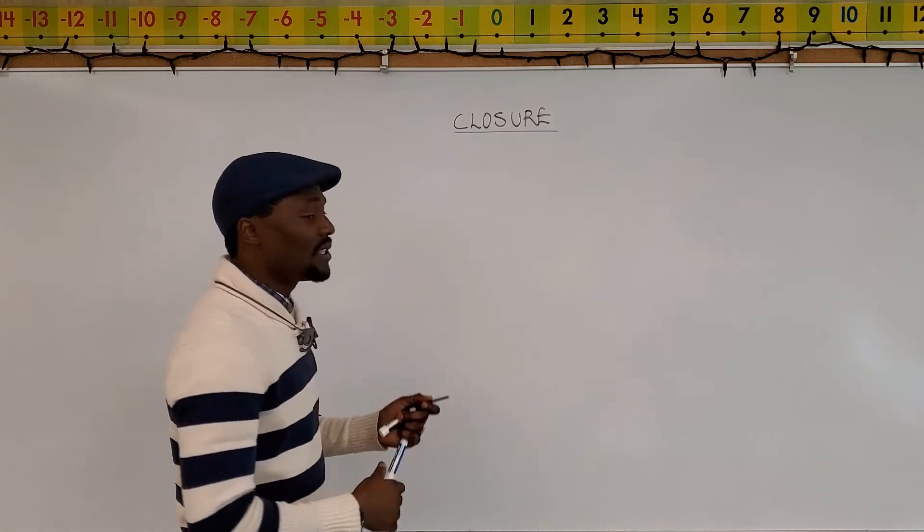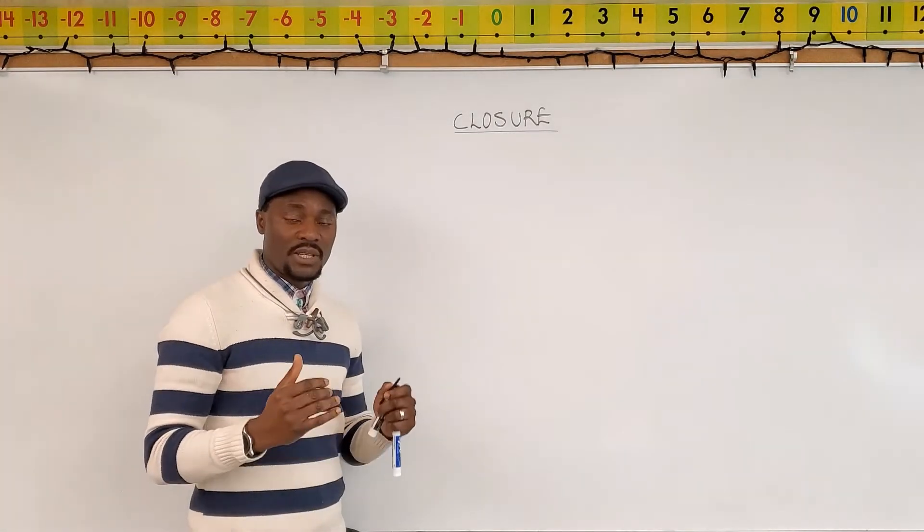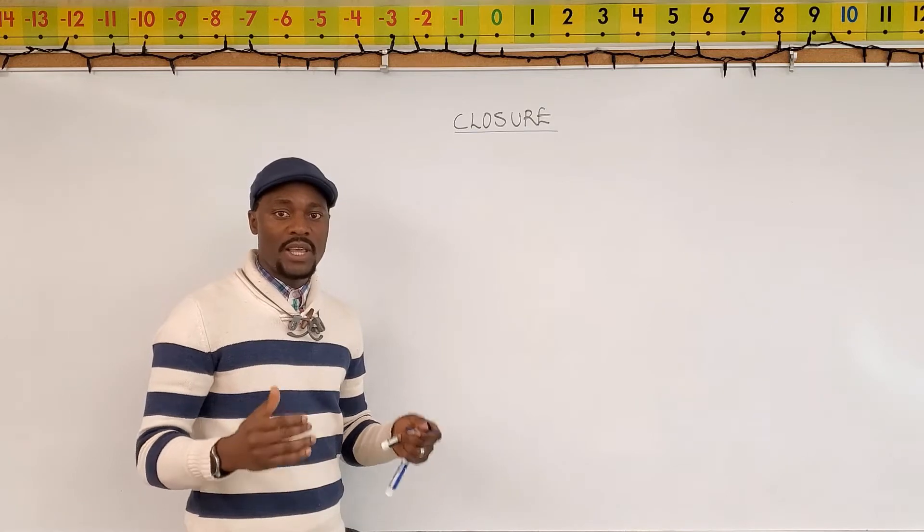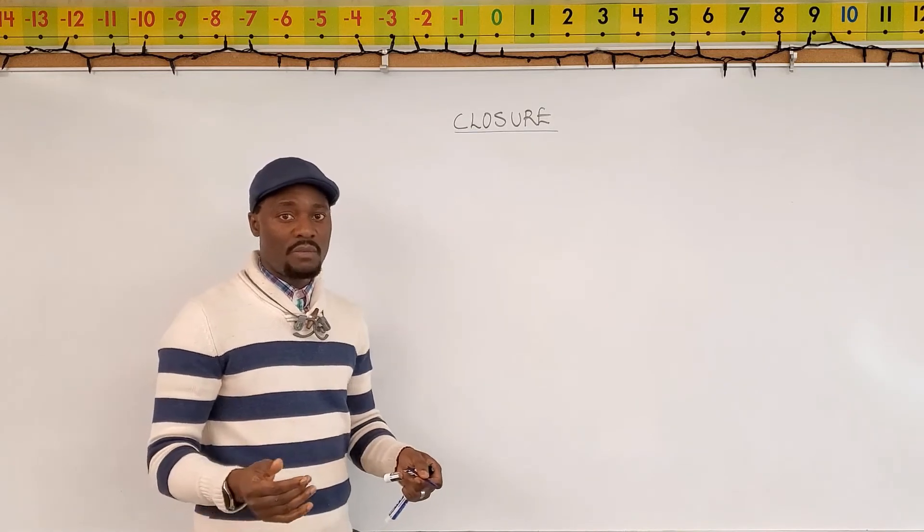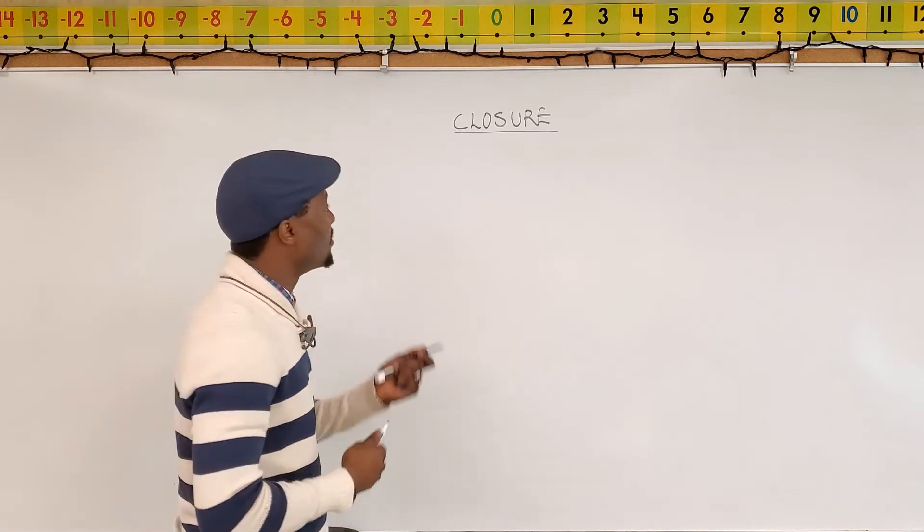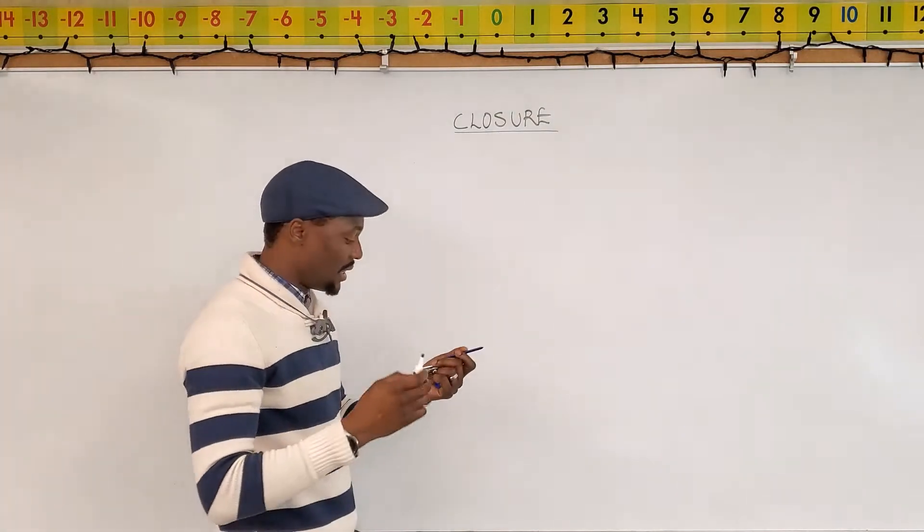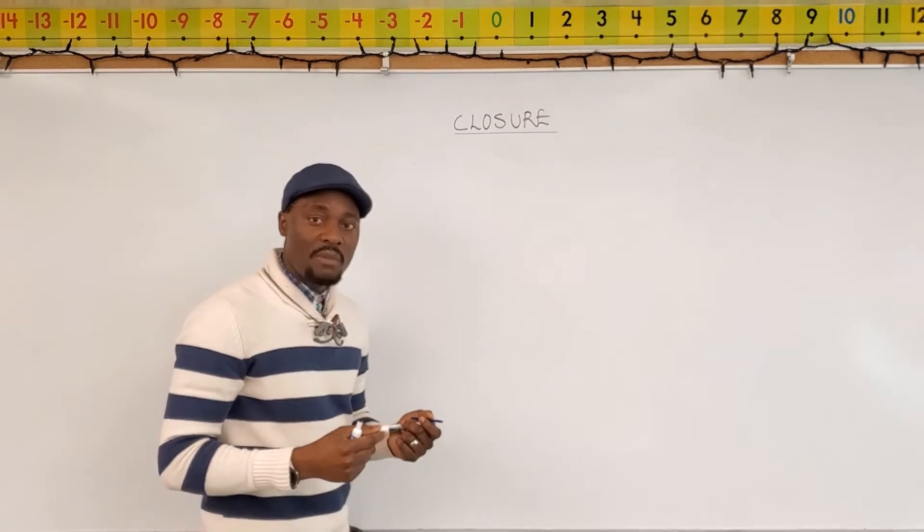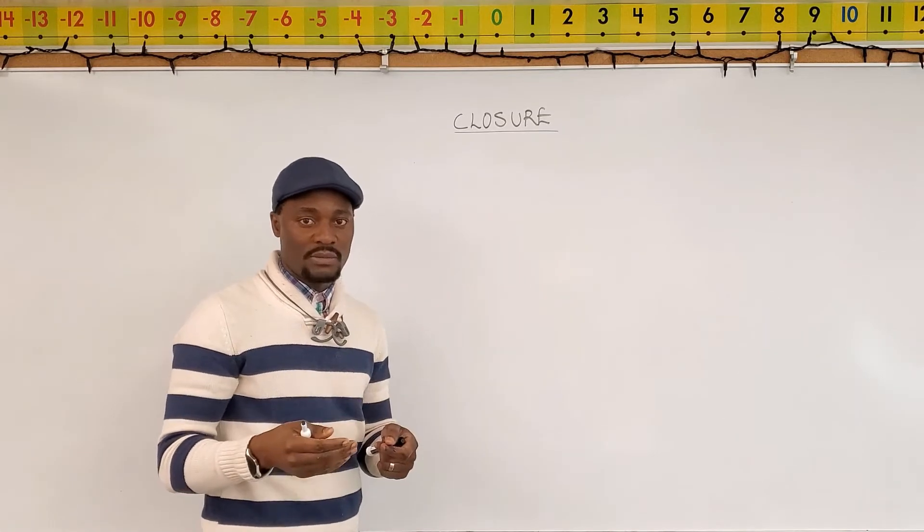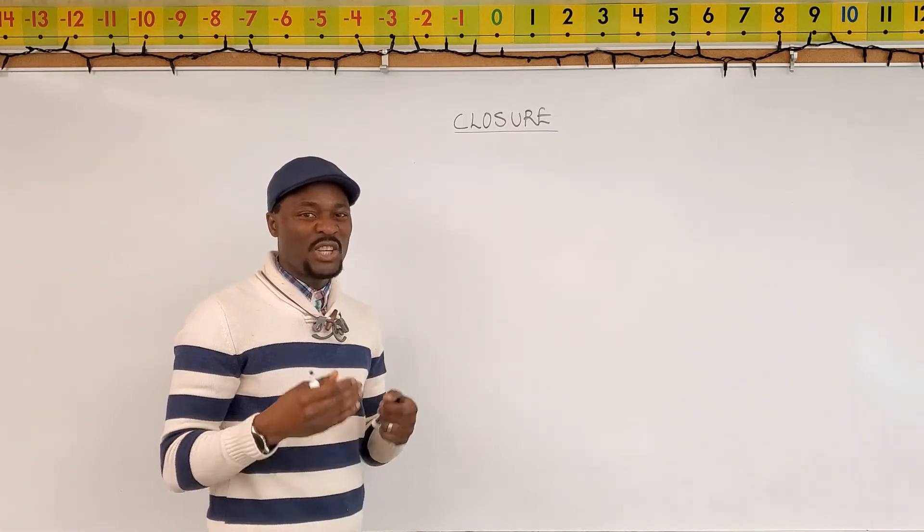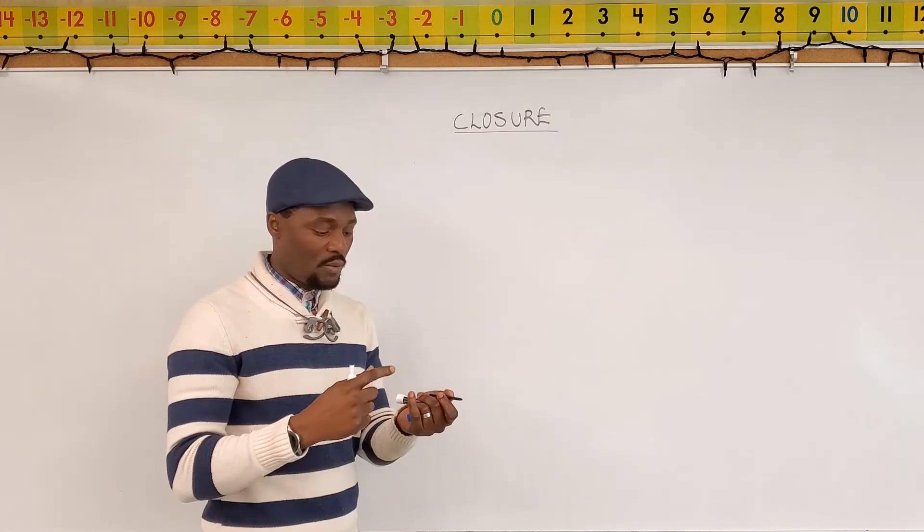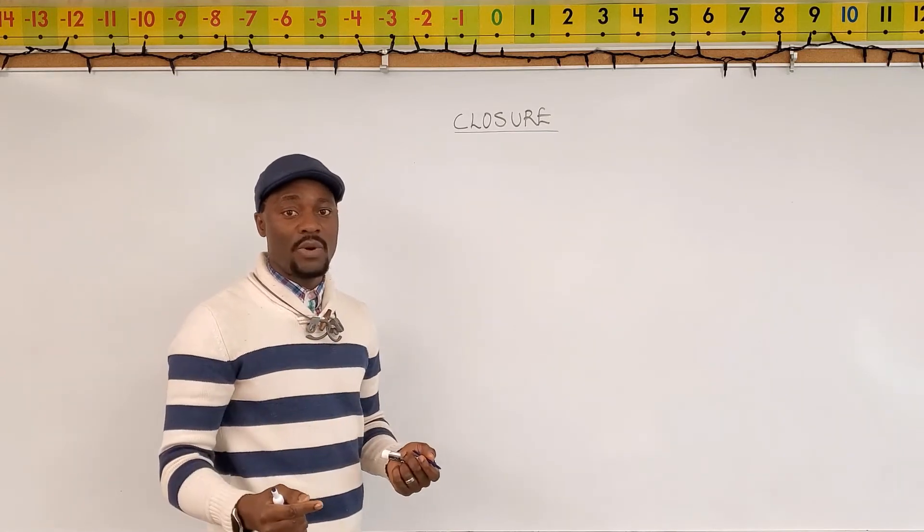So what does it mean to say that a set of numbers has closure under a certain operation? I have just used three expressions. The first one is closure which I've written as a topic. The second one is under an operation and whether the set is closed or not. So what is a set, what is closure, and what is an operation?